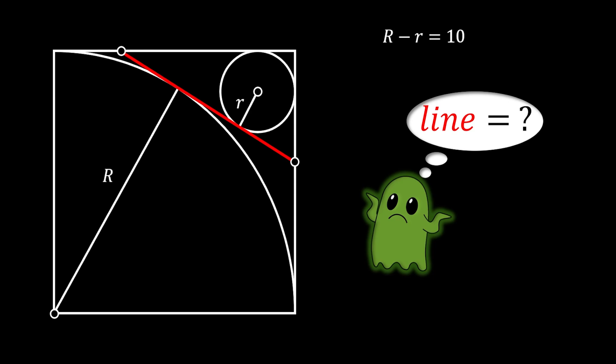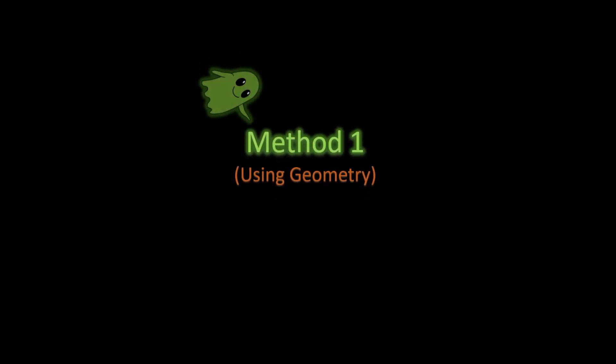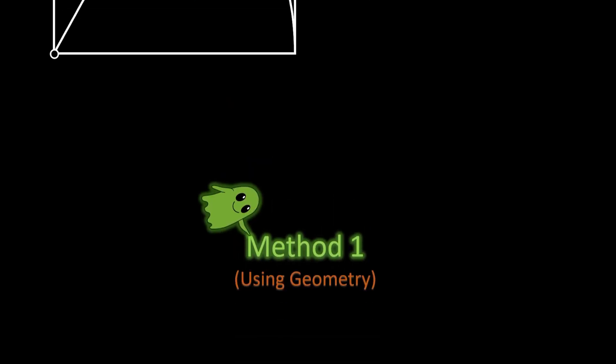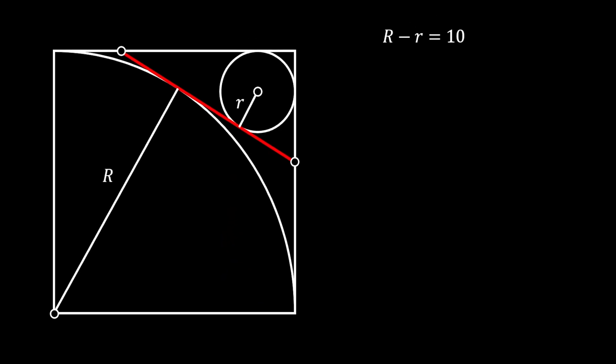We are going to use two different methods to solve this problem. In the first method we're going to use a pure geometric approach. We will start by marking the points of tangency for both our quarter circle and our full circle. Then using those points we can divide our red line into three different segments with the lengths of A, B, and C.